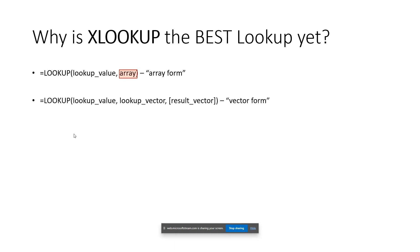They took the array form and upgraded it to the vector form. The primary improvement is that it takes the single array and breaks it into a lookup vector and a result vector — 'vector' just being a fancy word for column. This means you can designate which column to look in and which other column to return from. It also means the lookup column can be to the left or to the right of the return column — a big improvement.